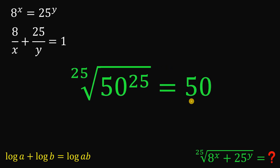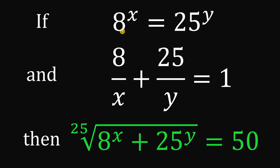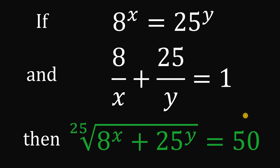And that is our answer to this question. Therefore, if 8 raised to x equals 25 raised to y, and 8 over x plus 25 over y equals 1, then the numerical value of the 25th root of 8 raised to x plus 25 raised to y is 50. And as always, we are done.